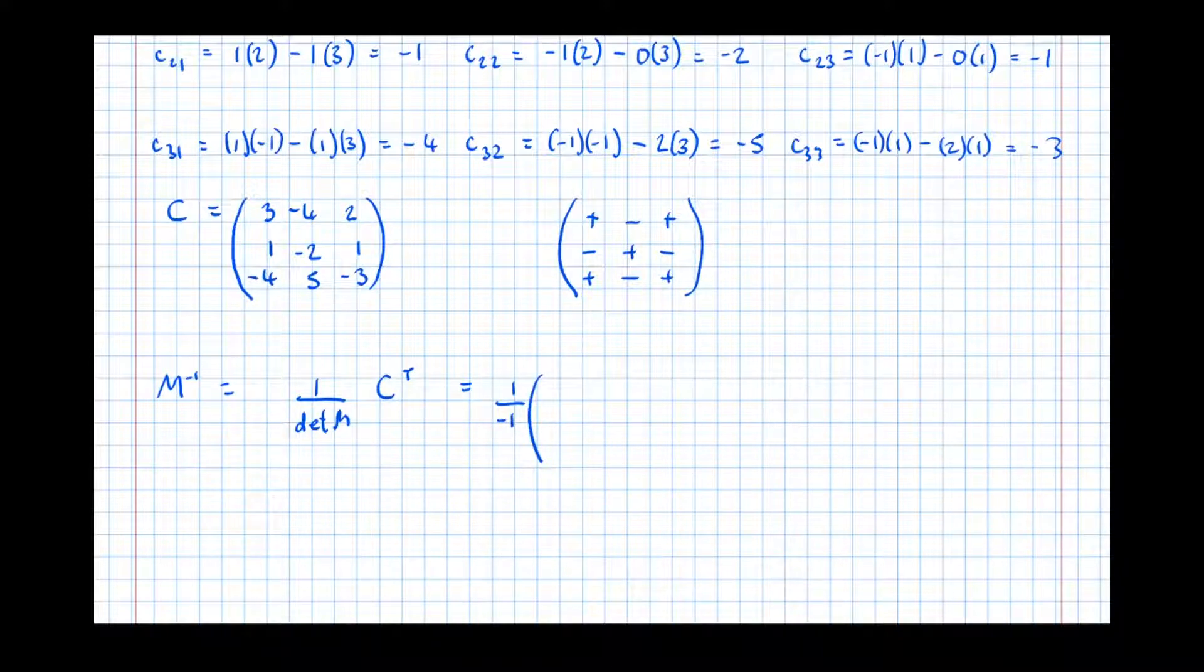So what I'm going to do, I'm going to read out the columns, but I'm going to write it in rows, and that's an easy way of doing the transpose. So 3, 1, -4 is the first column. So the first row is 3, 1, -4. The second column, -4, -2, 5, means the second row is -4, -2, 5. And the third column, 2, 1, -3. The third row is 2, 1, -3.